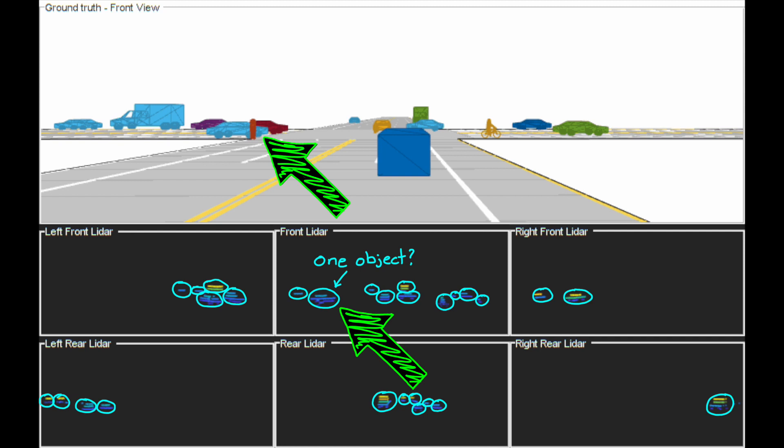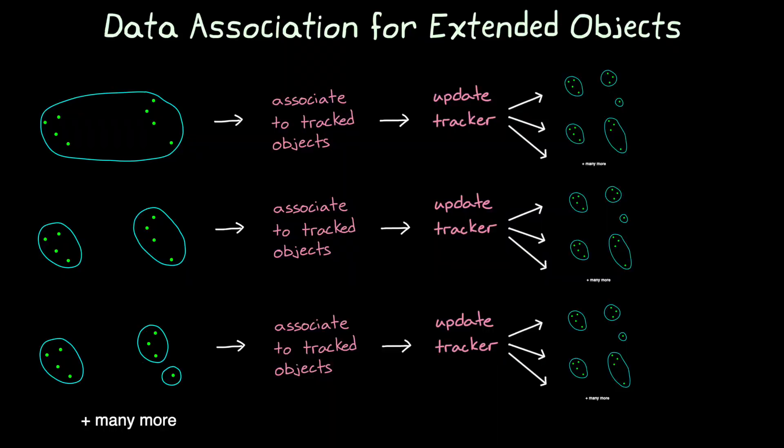Therefore there are even smarter ways of partitioning, where the output of the tracker is used to help determine the partitions. This is called prediction partitioning. In this way, if the tracker believes that there are two objects in this area, we can tell the partitioning algorithm to create two groups here. Now, however partitioning is accomplished, what we end up with are many different hypotheses of how these detections are grouped, and the next step is to associate all of the detections in each hypothesis with a tracked object.